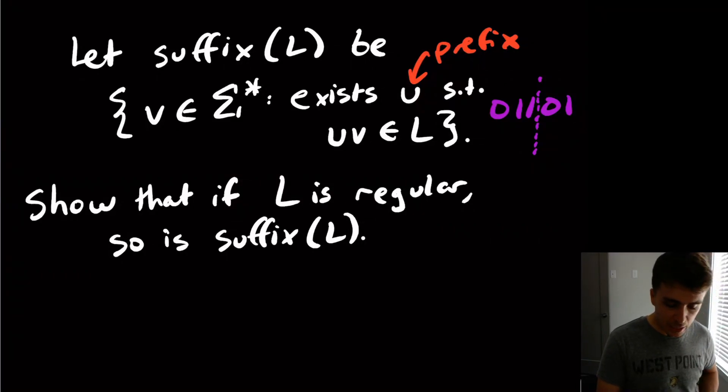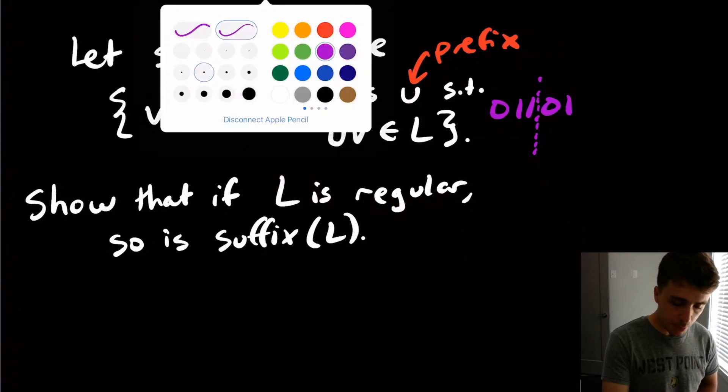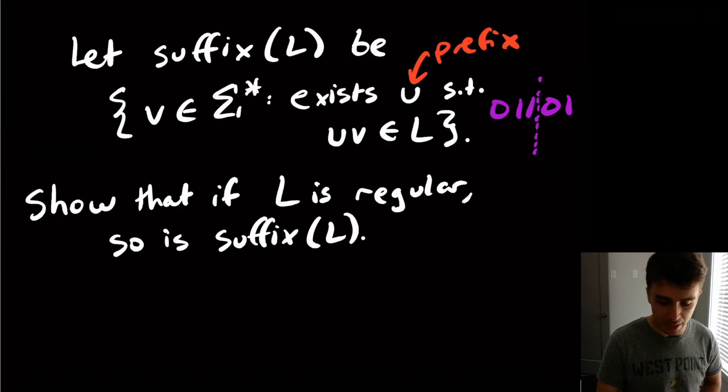So the thing is, we don't know anything about what L is. We don't know if it's infinite or not. All that we know is that it's regular. So remember, although it's been a while, that there is a DFA for L because it's regular. The language is regular, there's a DFA for it by definition.